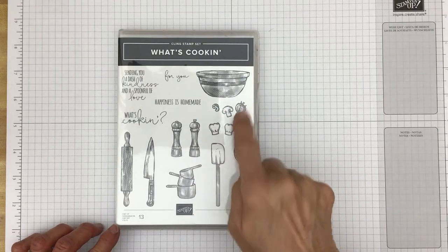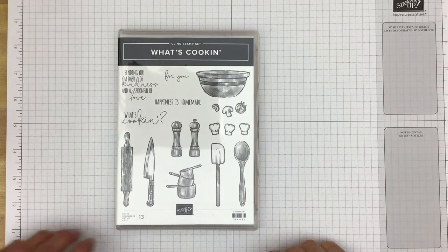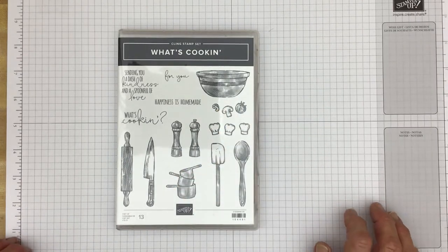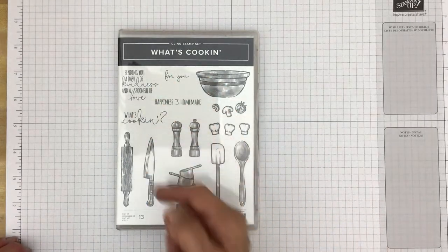And then the celery, mushroom and little cherry tomato and the little chef's hat do not but they would be easy to fussy cut if you'd like. And then there are some sentiments.